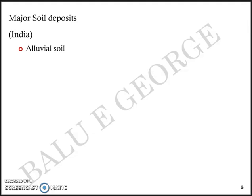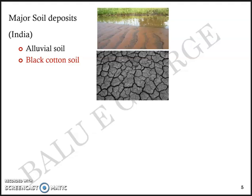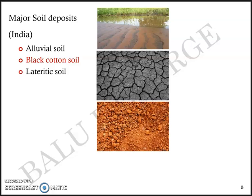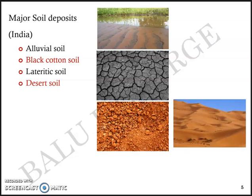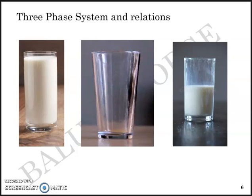The major soil deposits in India include alluvial soil, black cotton soil, lateritic soil, desert soil, and a few stretches of marine soil deposits. I have just brushed through these portions — major soil deposits, soil formation, agents of change — as they are just the introduction to the subject. The portions we are most interested in as geotechnical engineers start with the three-phase system and its relations.